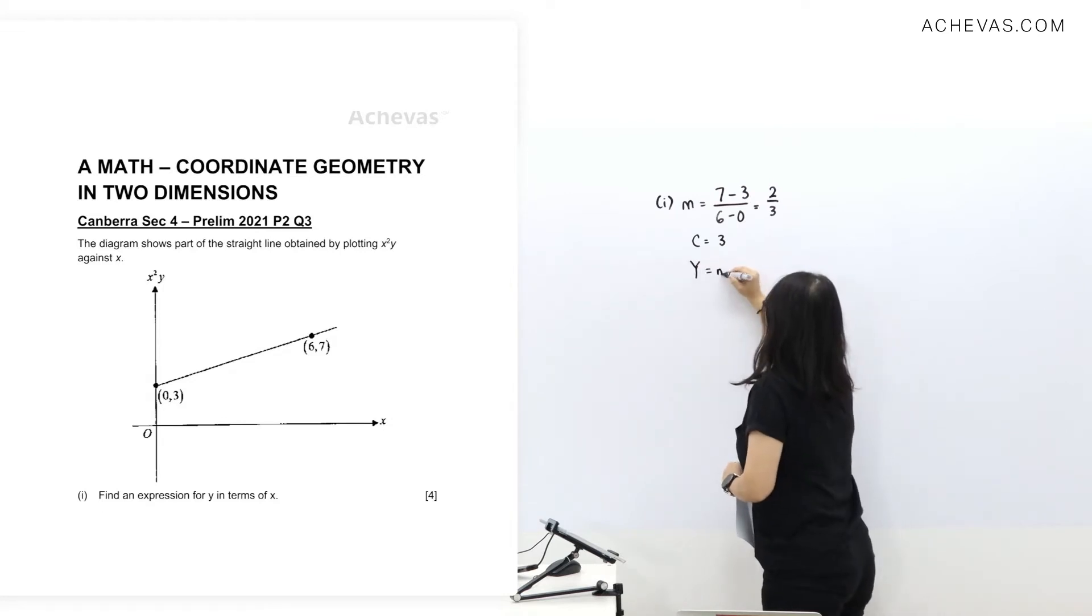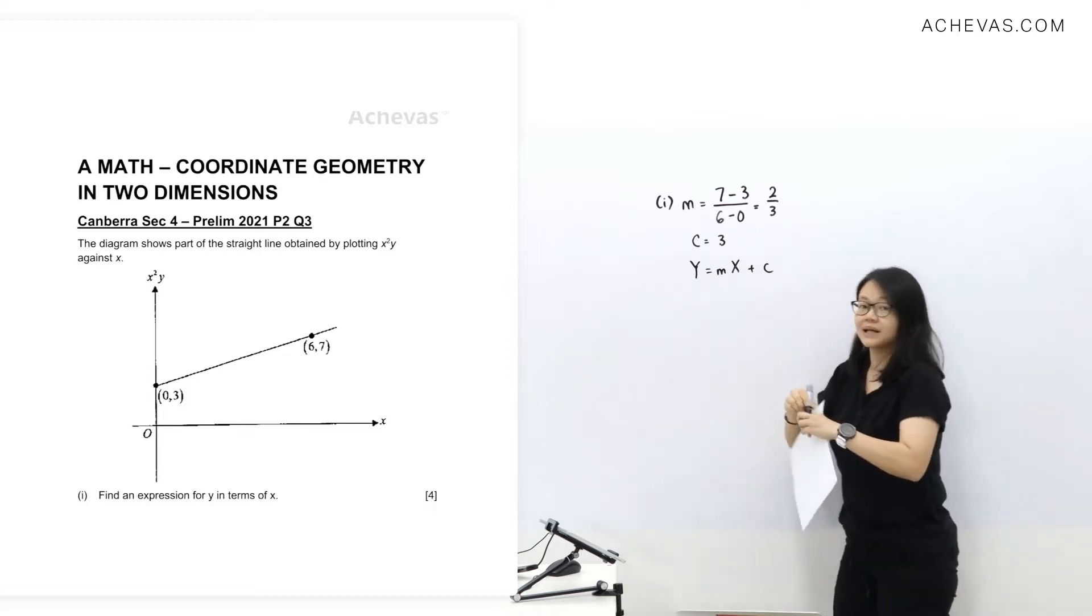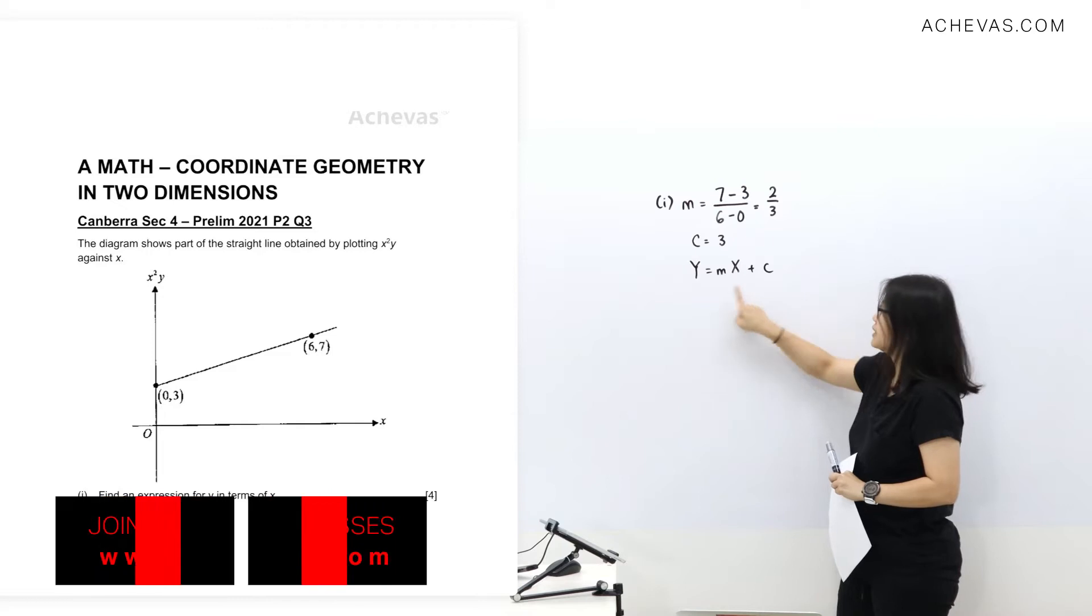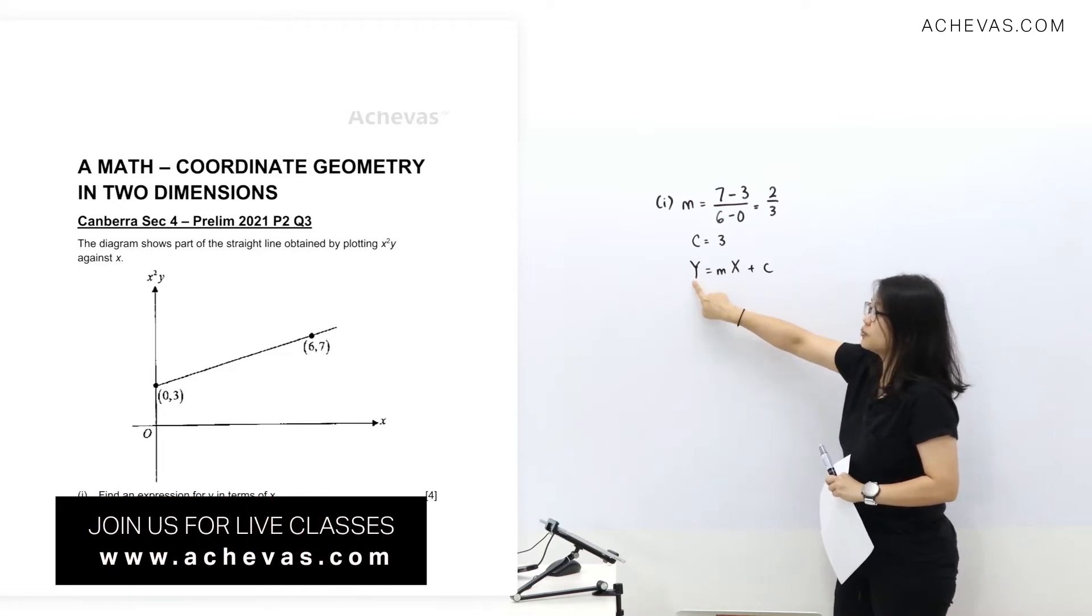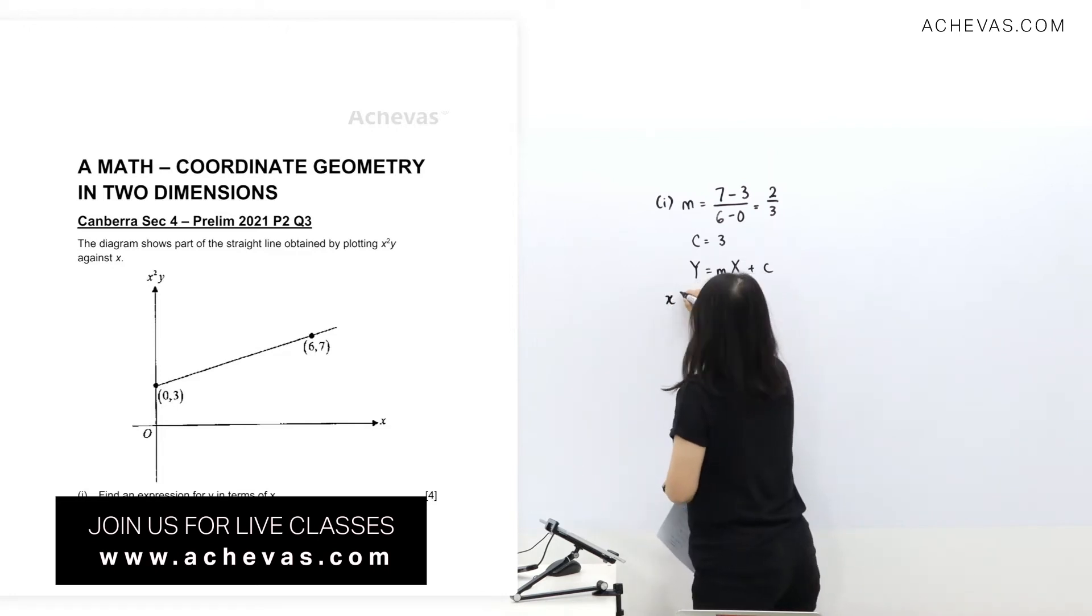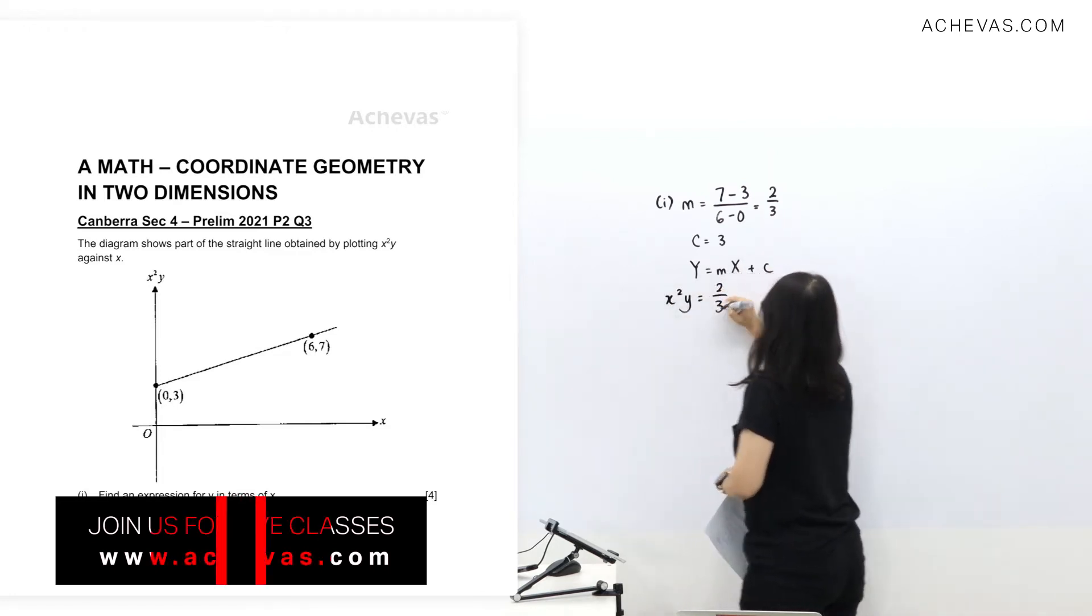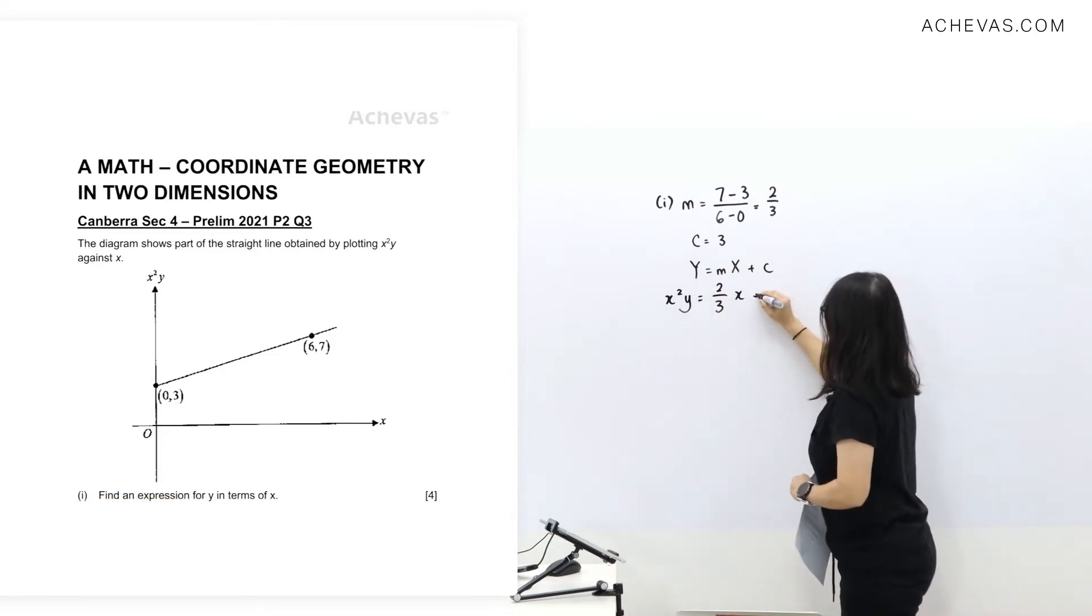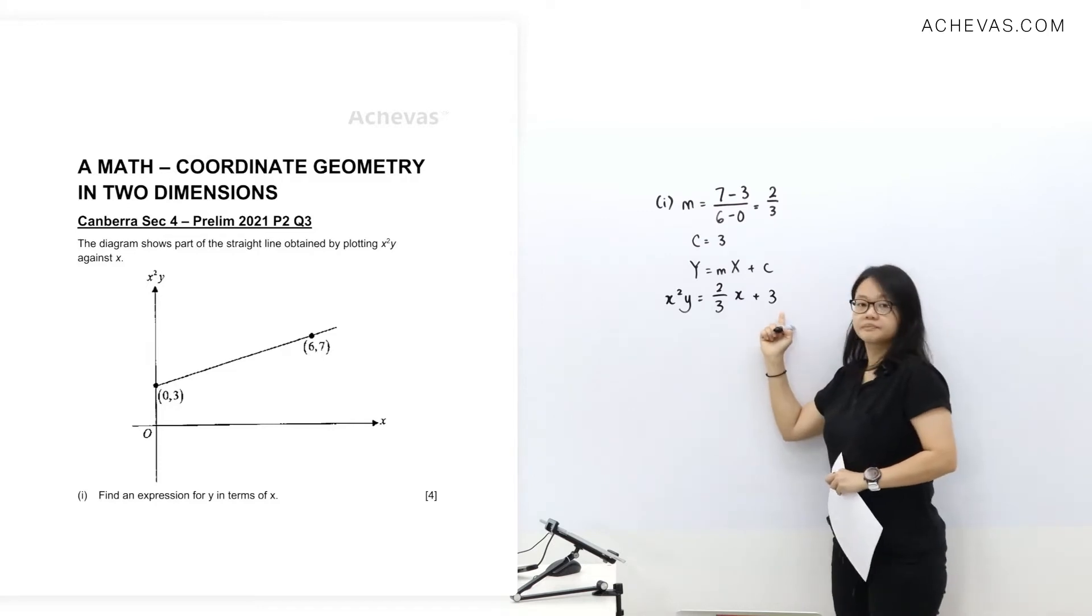So forming a straight line equation, y equals mx plus c, substituting gradient value and y-intercept. This one, substitute it with the y-axis. So we'll get gradient. This one, x-axis intercept.